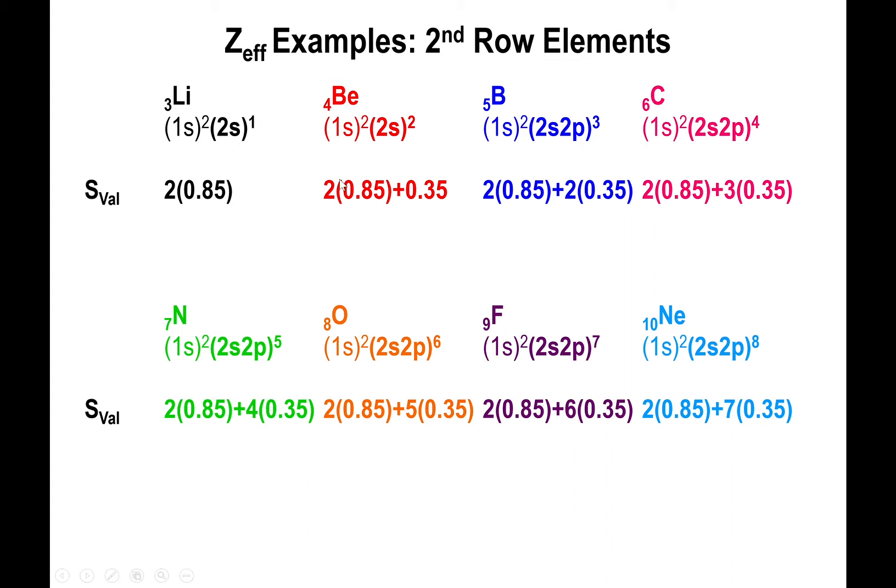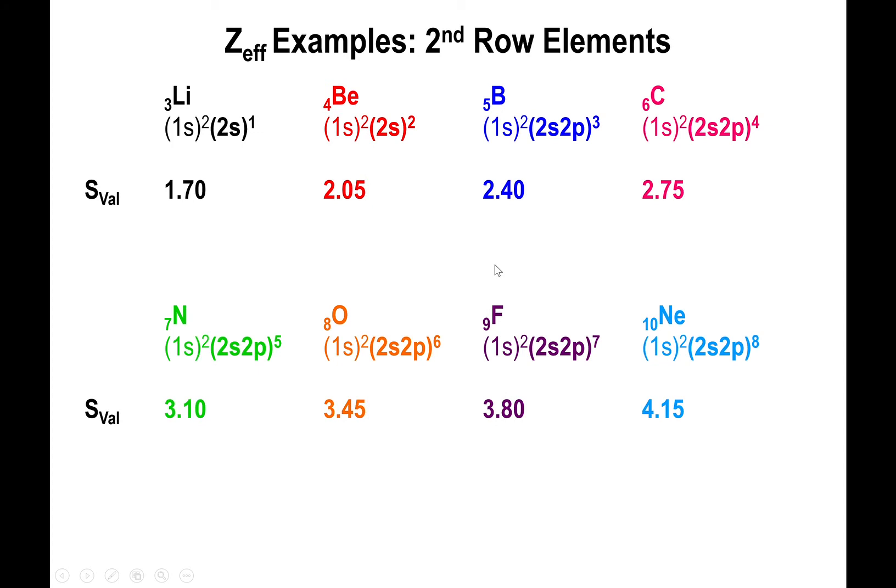You're going to multiply all of these numbers together. Two times 0.85, which will be roughly 1.7, and then you multiply 0.35 by whatever number it corresponds to. Once you add them all up together, you're going to find the values that you see here on the slide: 1.7 for lithium, 2.05 for beryllium, 2.40 for boron, 2.75 for carbon, 3.10 for nitrogen, 3.45 for oxygen, 3.8 for fluorine, and 4.15 for neon.